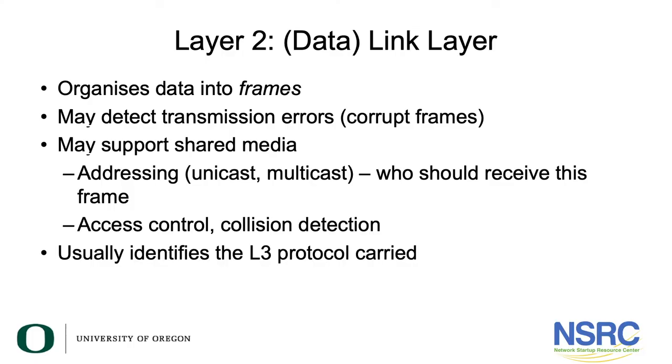Let's have a look at Layer 2, which is the link layer or the data link layer. The main job of Layer 2 is to organize that stream of ones and zeros into frames — into useful units of information. The way that Layer 2 normally does that is by having a special pattern of ones and zeros that marks the start and the end of the frame. This is a pattern which either cannot occur in the middle of a frame or is very unlikely to, so that the receiver can see where a frame starts and where a frame ends.